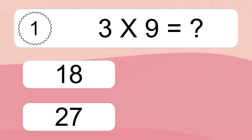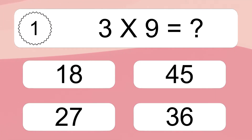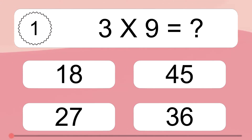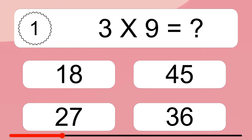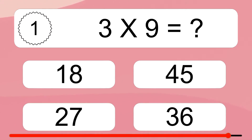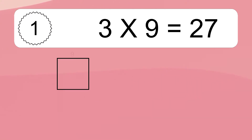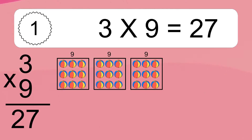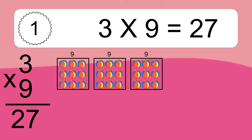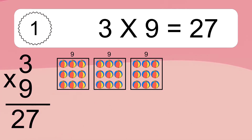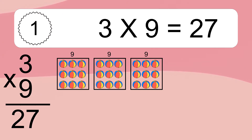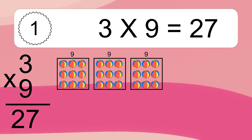3 times 9 equals what? 3 times 9 equals 27. We have 3 boxes, and each box has 9 colorful balls inside. If you count all the balls in all the boxes together, you will have 3 times 9 balls. This equals 27 balls.